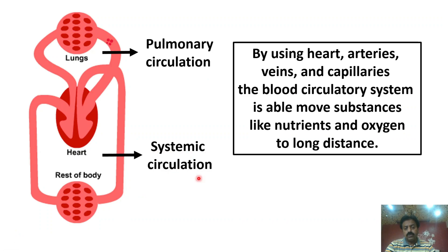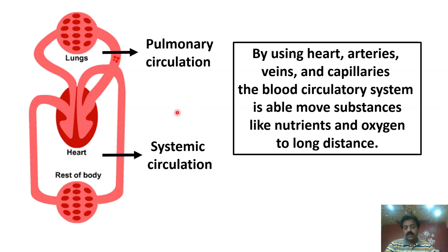The circulation between the heart and the different body parts is called Systemic Circulation. Blood travels throughout the whole body; even if organs are far from each other, that distance is covered through the blood. When blood moves through the whole body, two things reach every cell: nutrients and oxygen.